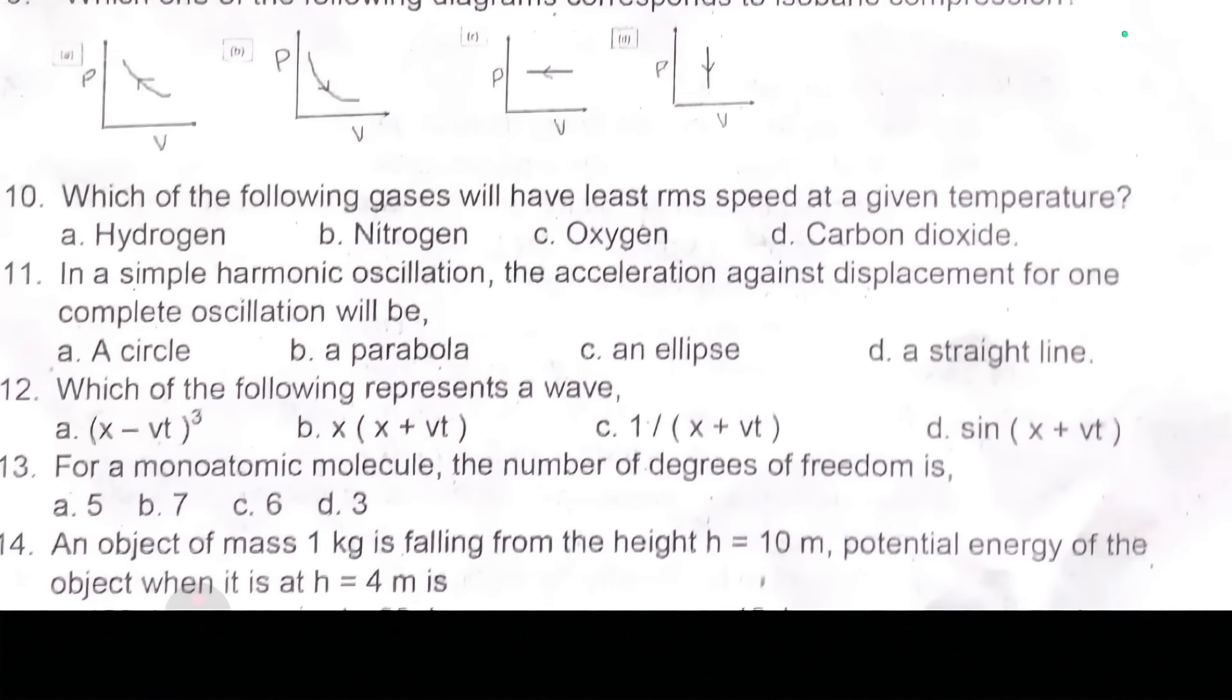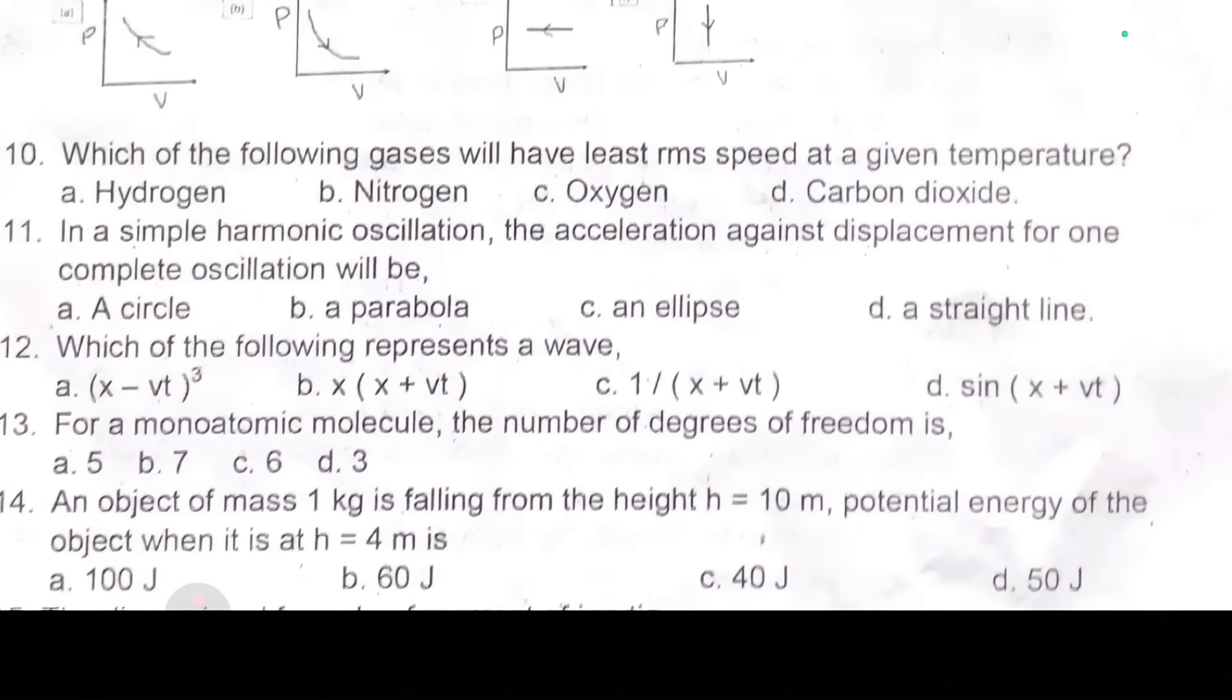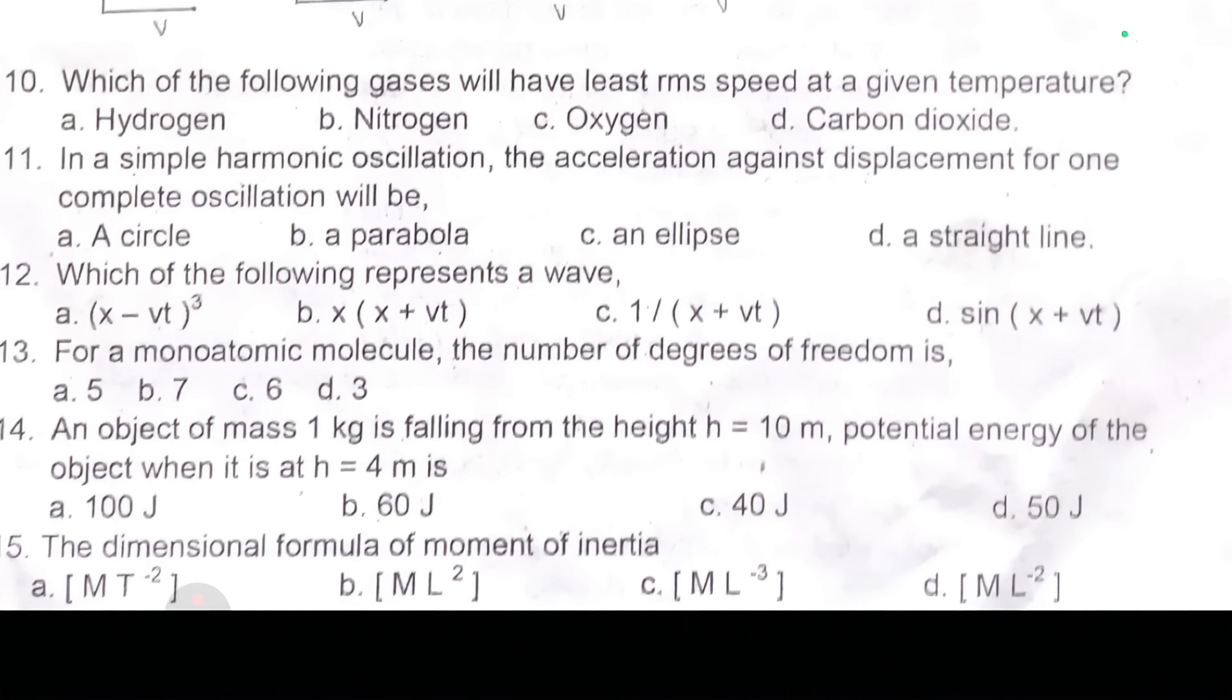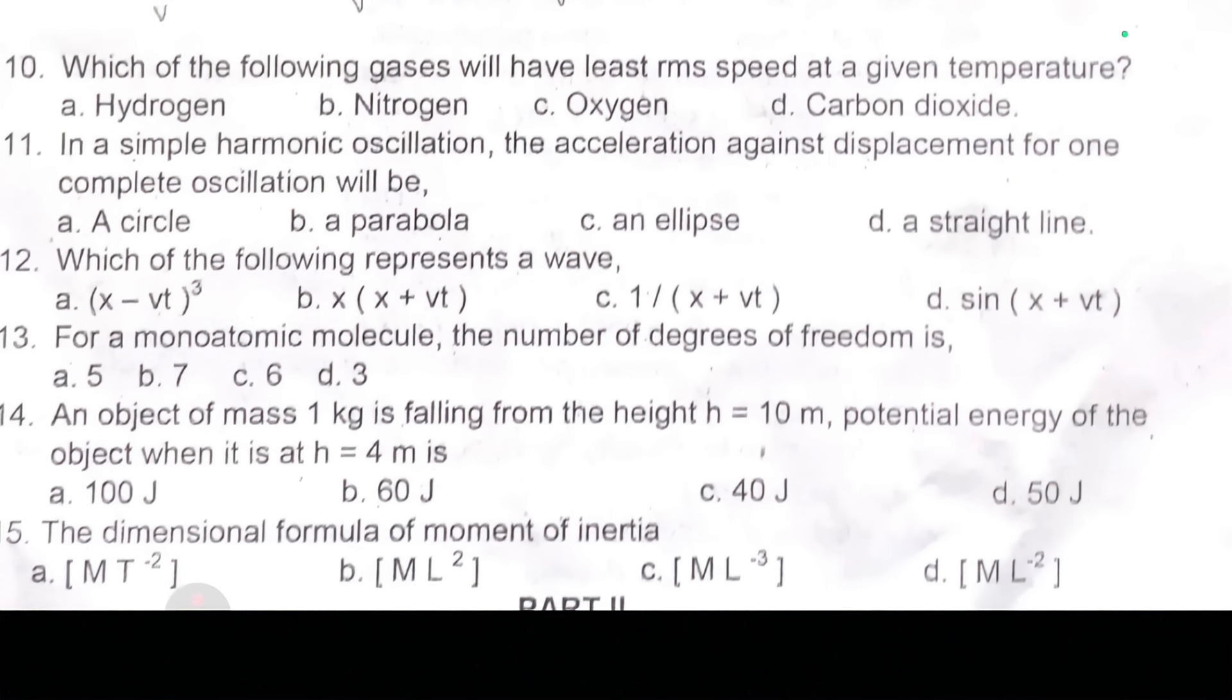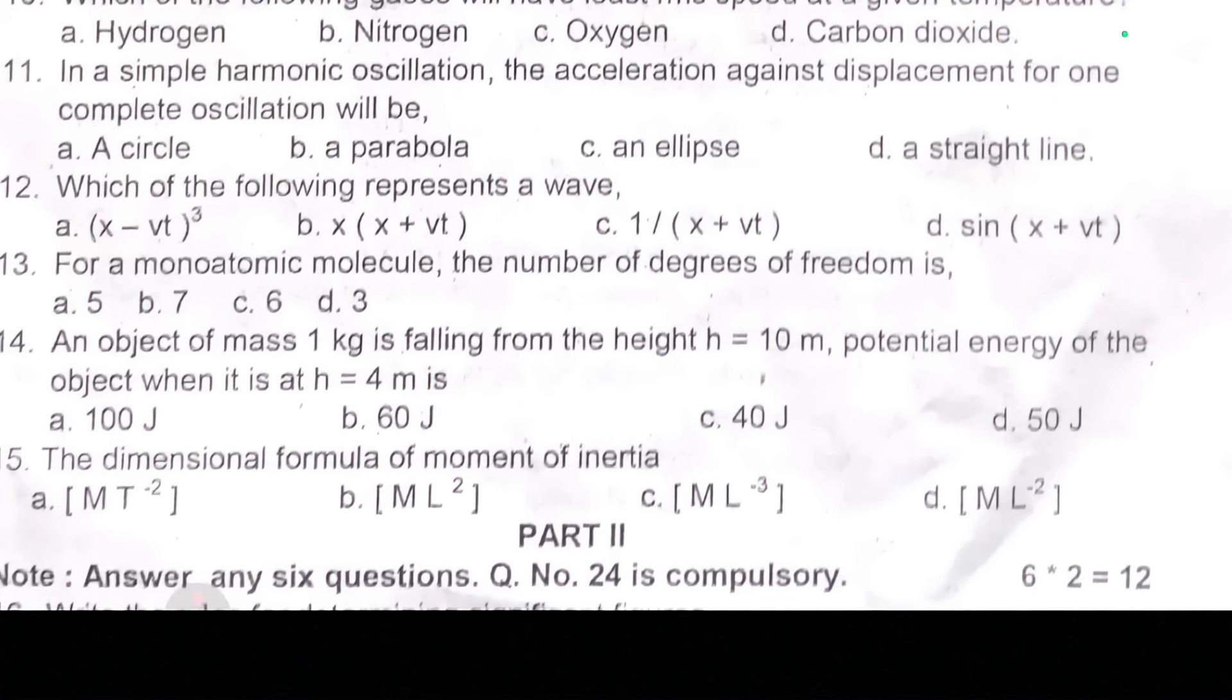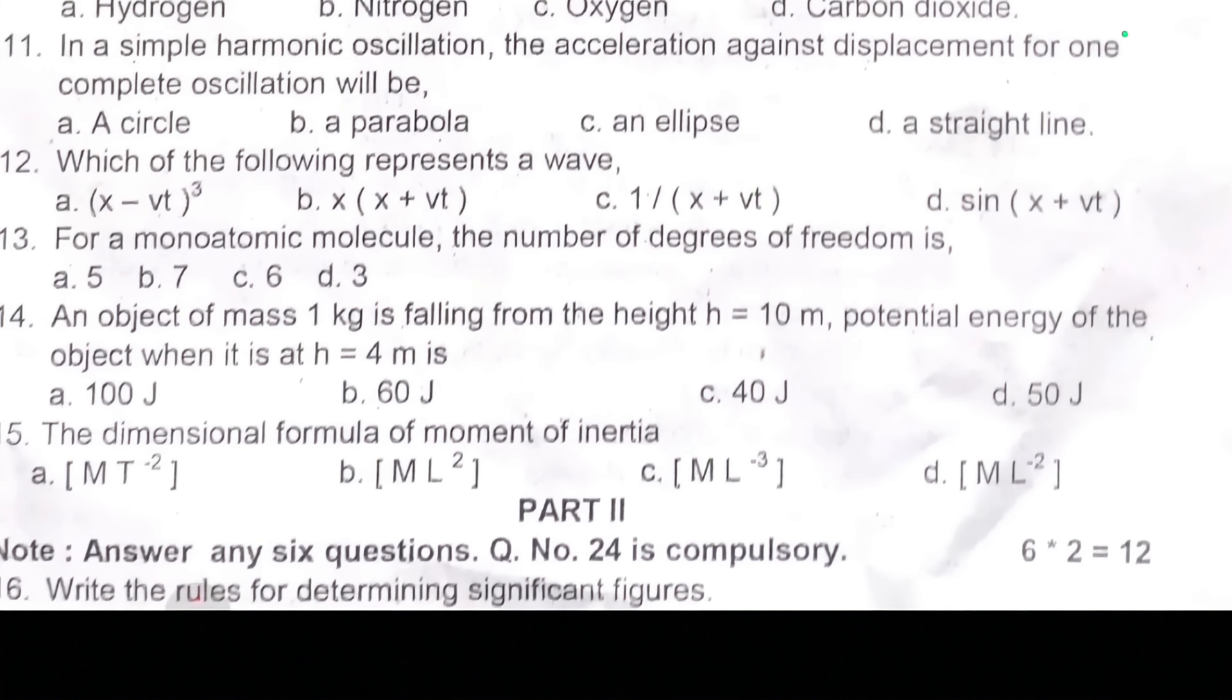Thirteenth one, for a monoatomic molecule, the number of degrees of freedom is dash. Fourteenth one, an object of mass 1 kg is falling from the height h equal to 10 meter. Potential energy of the object when it is at height h equal to 4 meters is dash. Fifteenth one, the dimensional formula of moment of inertia is dash.